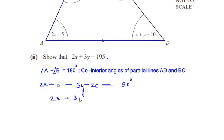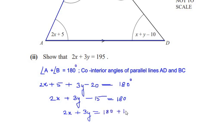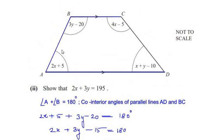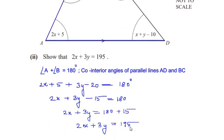We write it as 2x plus 3y, and 5 minus 20 gives us negative 15, is equal to 180. Gathering the constants on one side of the equation, we get 2x plus 3y is equal to 180 plus 15, giving a total of 2x plus 3y is equal to 195, as required. We have shown that the addition of angle A and angle B gives us 195 degrees. Now let us look at the last part.